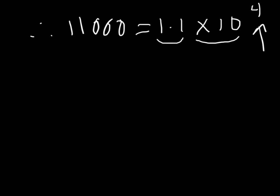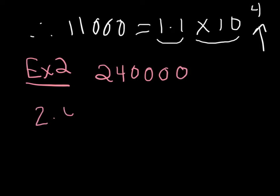So let's just do another example. Example 2, let's do 240,000. So, first step, one number before, one after, 2.4. Second step, add times 10. Third step, count the number, the exponent is count the number of digits and subtract 1. 1, 2, 3, 4, 5, 6. So the exponent is going to be 5.